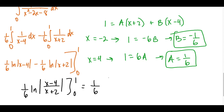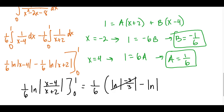Now we plug in. We'll leave the constant 1 over 6 in front. Plugging in 1: natural log absolute value of 1 minus 4 over 1 plus 2 equals natural log of negative 3 over 3, which gives natural log absolute value of negative 1. The absolute value of negative 1 is 1, and natural log of 1 is 0, so that piece cancels. Then subtracting the lower limit: natural log absolute value of 0 minus 4 over 0 plus 2, which is negative 4 over 2, simplifying to natural log of positive 2. So our final answer is 1 over 6 times negative natural log of 2, which equals negative 1 over 6 times natural log of 2.